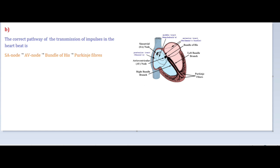The SA node creates the action potential which helps to start the contraction of the atrium. So the correct pathway of transmission of impulse in the heartbeat is: SA node → AV node → Bundle of His → Purkinje fibers. The Bundle of His branches into the ventricular musculature, and these branches have many fiber structures called Purkinje fibers. This is the correct pathway.